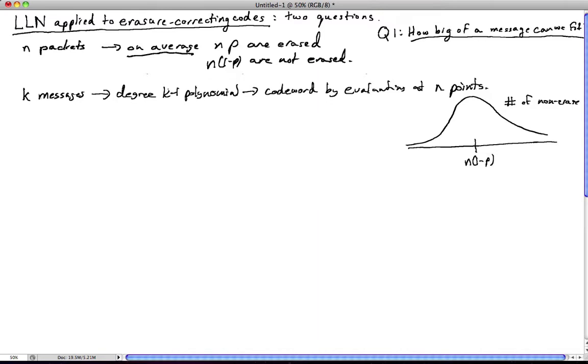So at one level, you could say it doesn't really matter. We could carry out this procedure no matter what k is. But that's not the point. The point is, we want to understand when will such a procedure actually be successful. So for it to be successful, what do we need to know?